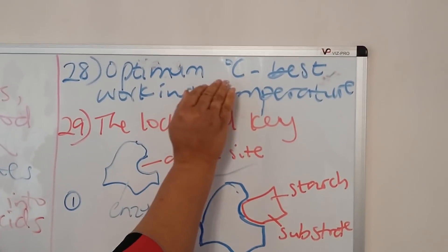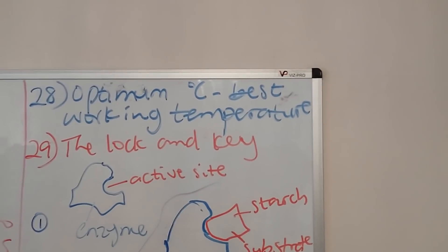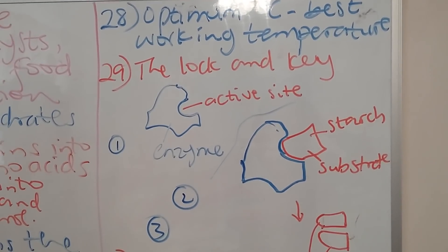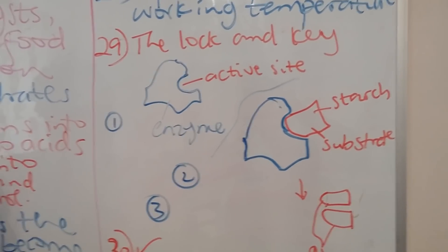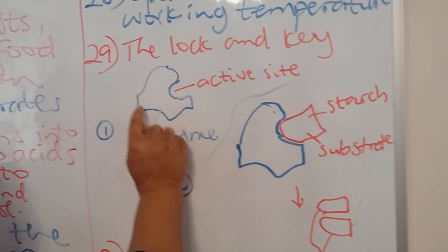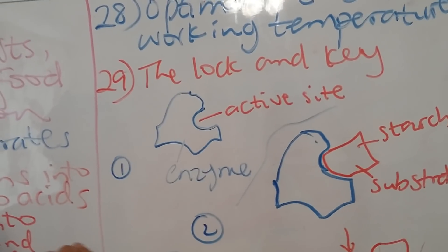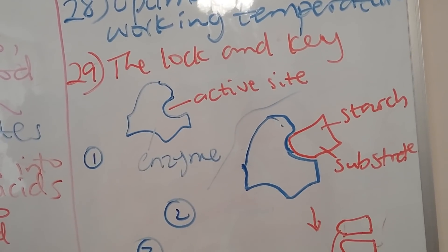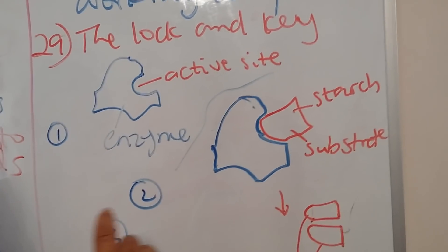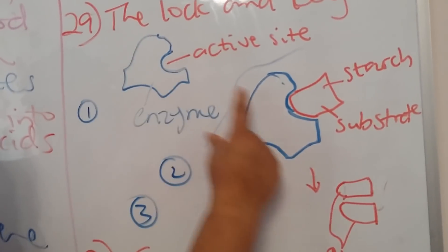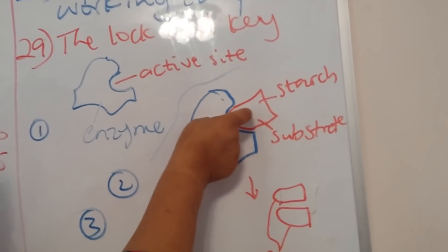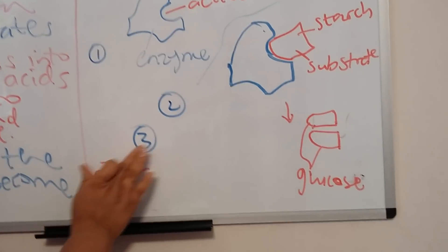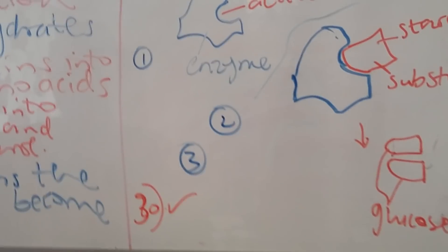Question 28: what is optimum temperature? It is the temperature at which an enzyme works best. Most enzymes in the body work best at around 37 degrees Celsius — the natural average body temperature — but when temperature rises to 40 degrees or above, the enzyme becomes denatured. The lock and key principle explains this: the substrate, such as starch, fits into the active site snugly like a key into a lock or a jigsaw puzzle. When they fit together, the enzyme breaks down the substrate — for example, starch is broken into glucose.